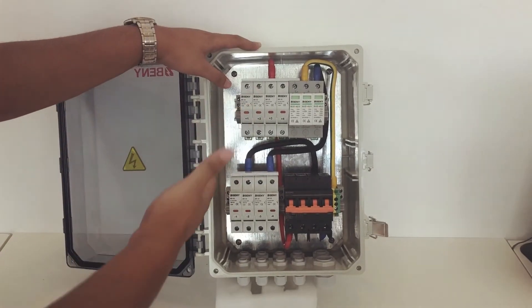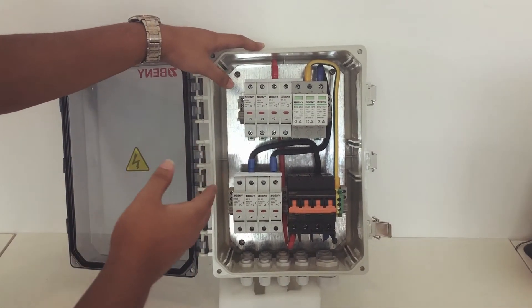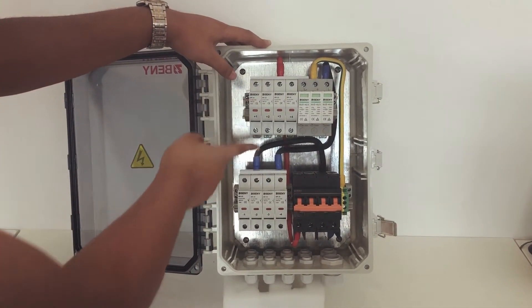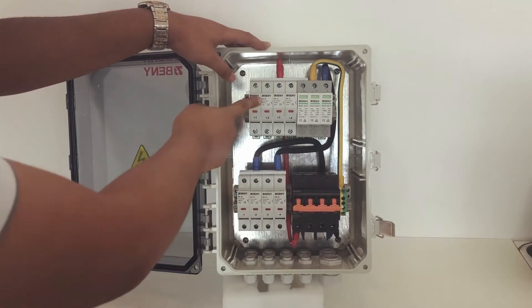So this is what's inside the combiner box. We have two fuses, the positive and the negative.